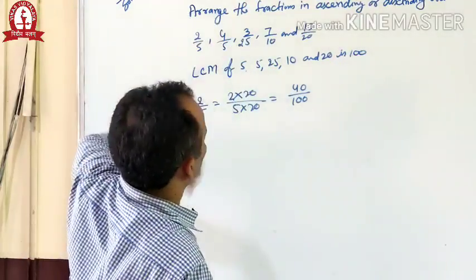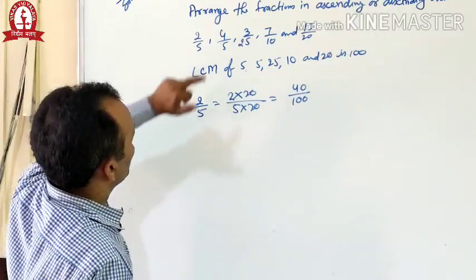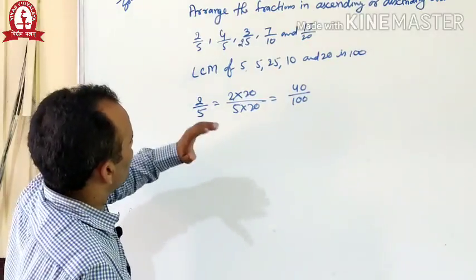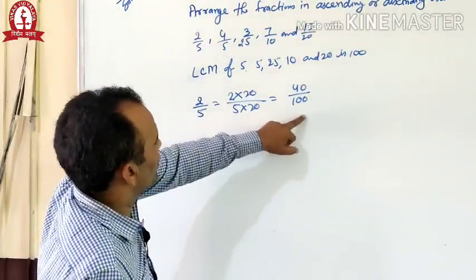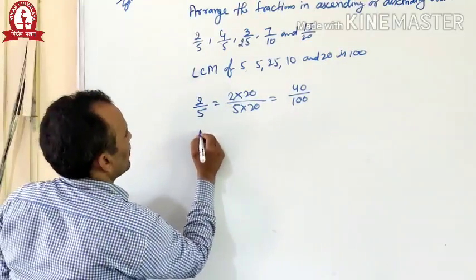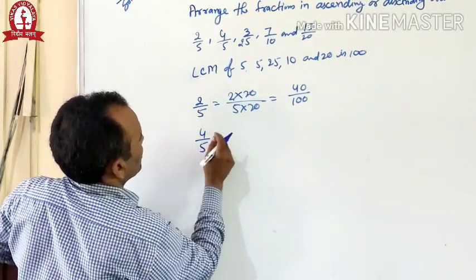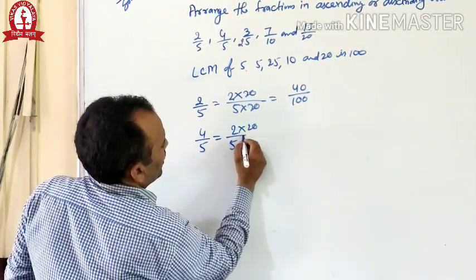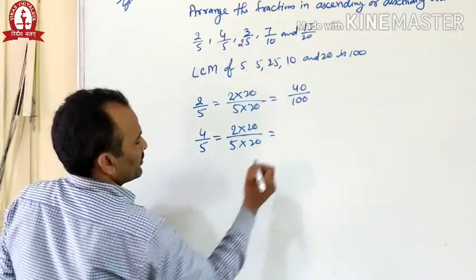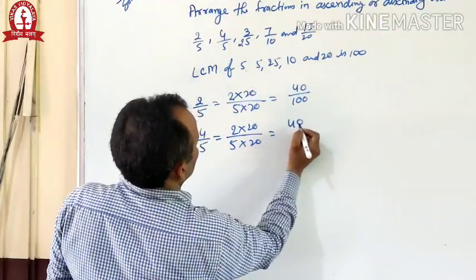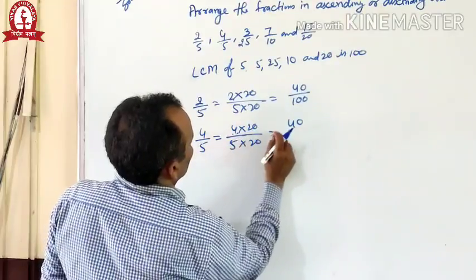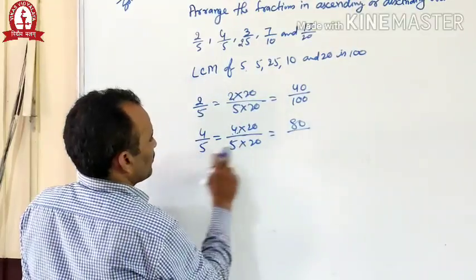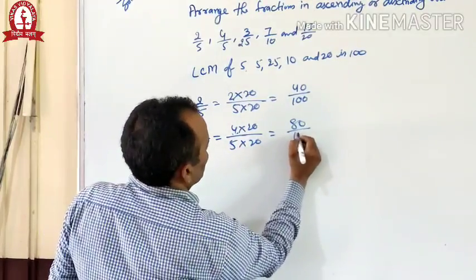Our second fraction is 4 by 5. What is the equivalent of 4 by 5 whose denominator is 100? Multiply both numerator and denominator by 20. The equivalent of 4 by 5 is 80 by 100.